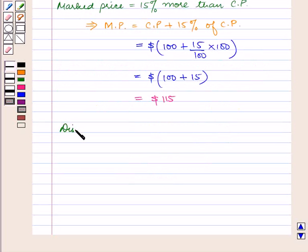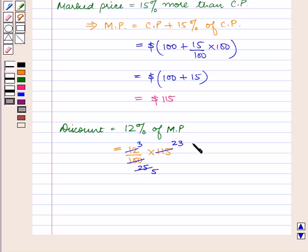Now, discount will be equal to 12% of the mark price, which is equal to 12 upon 100 into 115. This is equal to 69 upon 5, which is equal to $13.8.